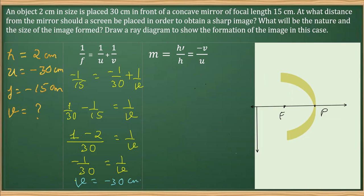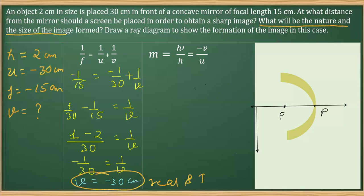So that is the first part of the sum — we found v equals minus 30 centimeters, meaning the screen should be placed 30 centimeters from the mirror. The question also asks for the nature of the image: since the sign is negative, the image is real and inverted.